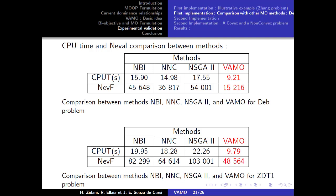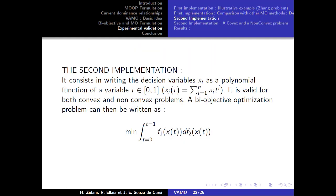The second implementation consists in writing the decision variable XI as a polynomial function of a variable. Solving the convex and non-convex problems with VAMO based on the second approach and using MATLAB Nelder-Mead toolbox with a dimension of 4 leads to the Pareto front of the figures.